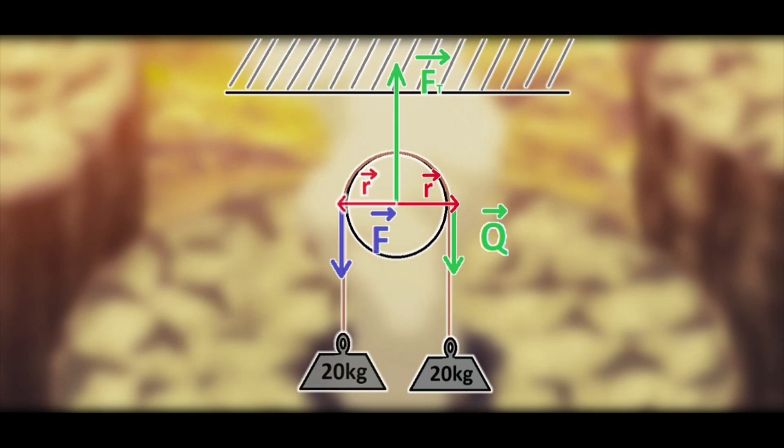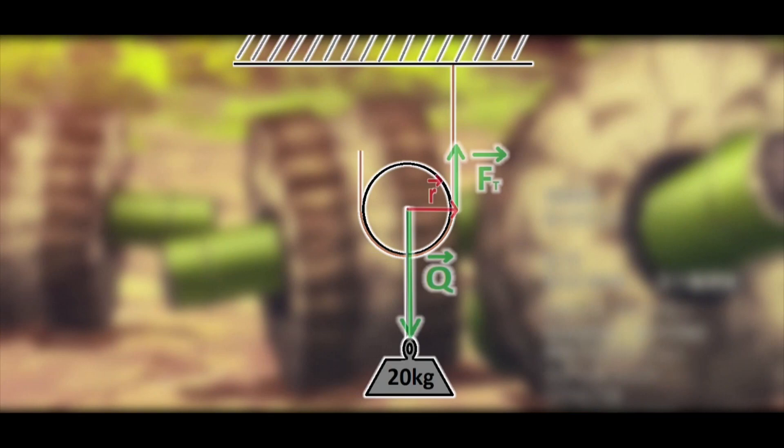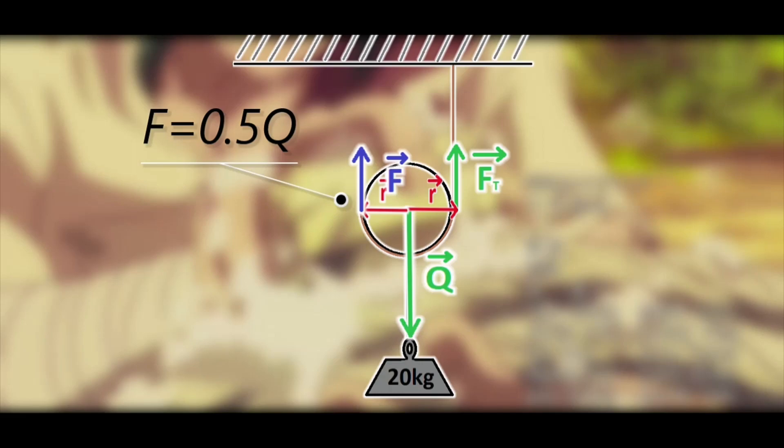However, in a setup like this, when we want to get the resultant zero, the force we use must be just twice smaller than weight of the object.